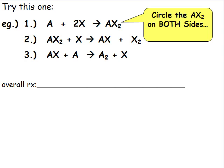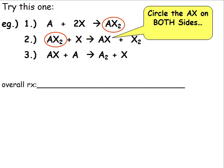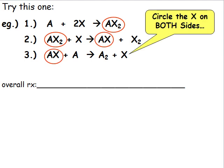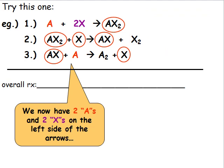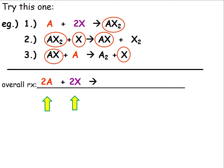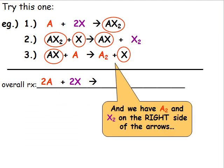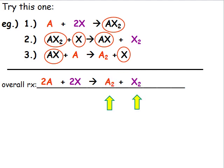Circle the AX2 on both sides. Circle the AX on both sides. Circle the X on both sides. Now we have 2 A's and 2 X's on the left side of the arrows, so we write those in our reactants. And we have A2 and X2 on the right side of the arrows. We write these in as the products.